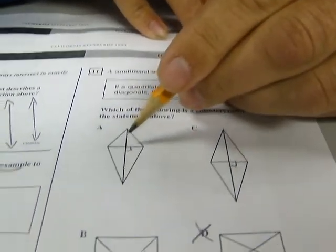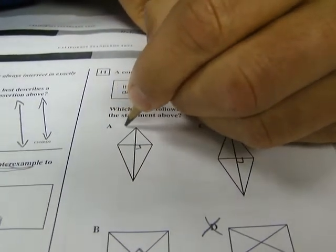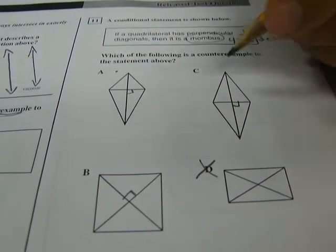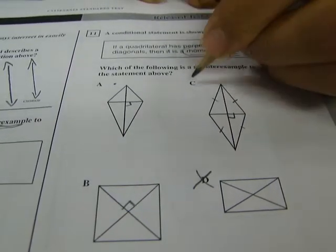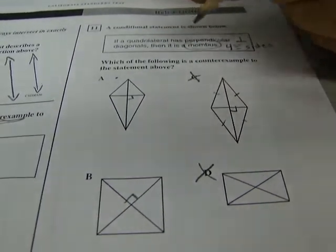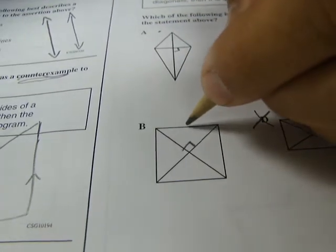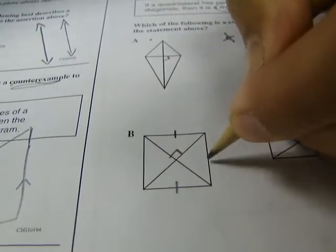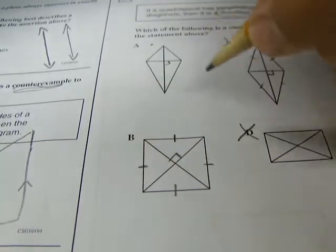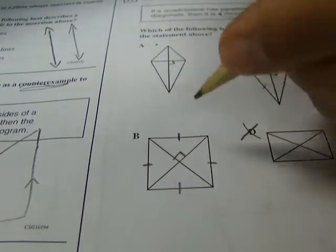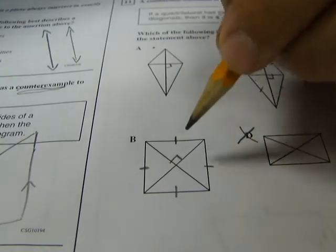So does this one have four congruent sides? No. So I think that might be the answer. I'll just put a little mark to show that that might be the answer. Does this one have four congruent sides? It sure looks like it. That's a rhombus. So that can't be the answer. And this one, I know it's kind of a trick. You think, well, that's a square. It's not a rhombus. But here's the thing. It has four congruent sides. So even though it is a square, it's also a rhombus. A square is a special kind of rhombus. So it still is a rhombus,